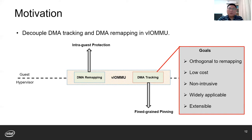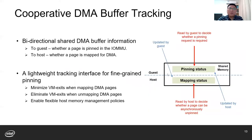Extensible — the solution should be extensible to help address other limitations in memory management, for example to help track dirty DMA pages. Here, we propose cooperative DMA buffer tracking as a paravirtualized interface. Cooperative means bi-directional information sharing between the guest and the host. The fundamental information shared is the pinned status and the DMA mapped status for each guest page.